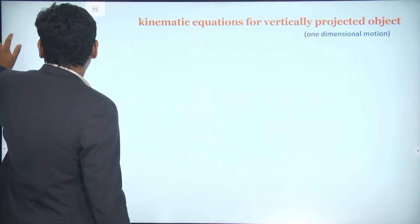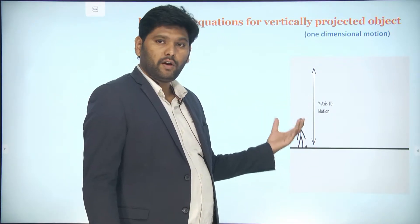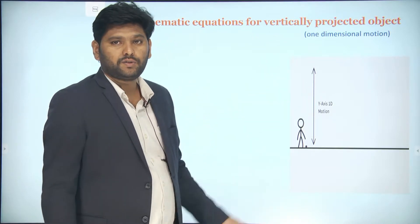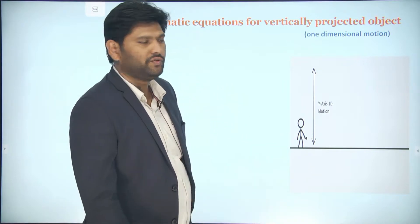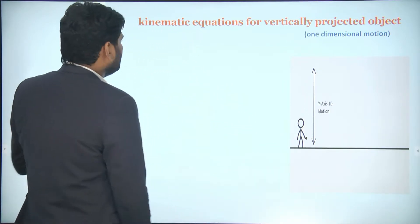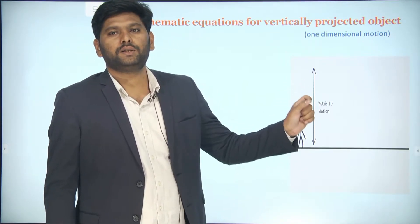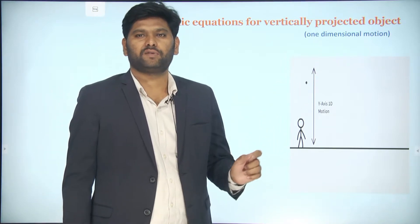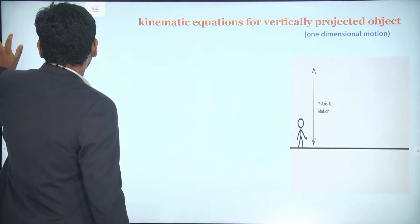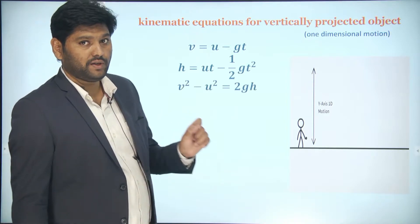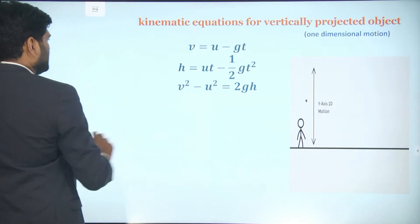A vertically projected body is one where a person projects an object in the upward direction, so it moves upward and then comes back downward. How do the equations of motion change in this case? The first equation v = u + at is changed: instead of a, we apply g, because the acceleration occurs due to gravity. So it becomes v = u + gt.